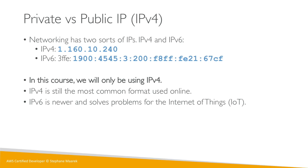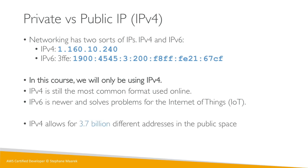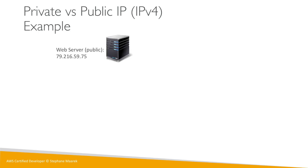IPv4 allows for 3.7 billion different addresses in public space, and that's almost running out. Each number can vary between 0 and 255 across each of the four sections separated by dots, so if you do the math you get 3.7 billion different addresses.